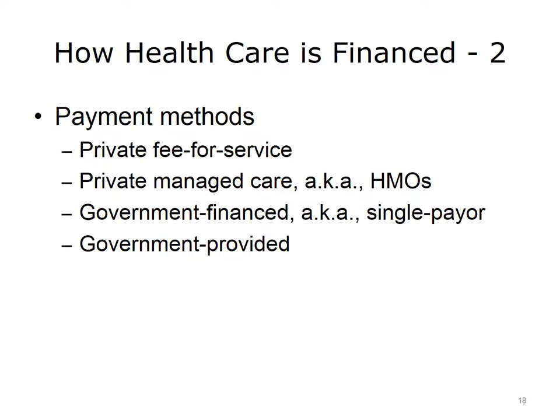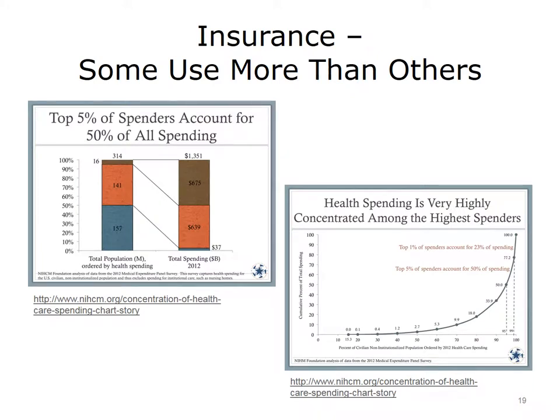Another payment method is government-paid insurance, where the individual gets health care and the government reimburses the physician or hospital. There is also government-provided care, where the government owns and runs physician offices, hospitals, and other parts of the health care system. Some people use more health care services than others. In the United States, the top 5% of spenders account for about 50% of all spending, while the top 1% of spenders account for 23% — about a quarter of all spending.